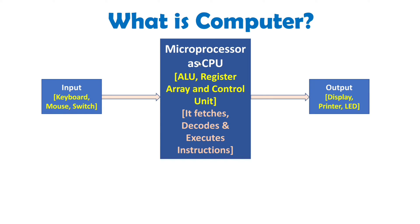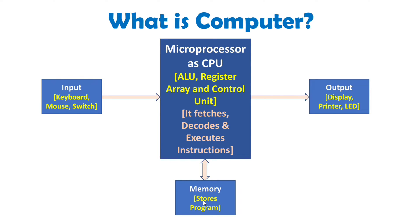The microprocessor does not have its own memory for programming, so we interface memory with the microprocessor. In memory we store programs — there will be data and programs by which we execute tasks. After execution of those instructions, there will be output in terms of display, printing operation, or LED.